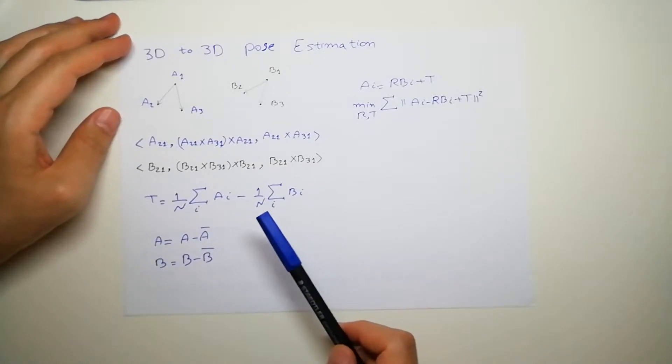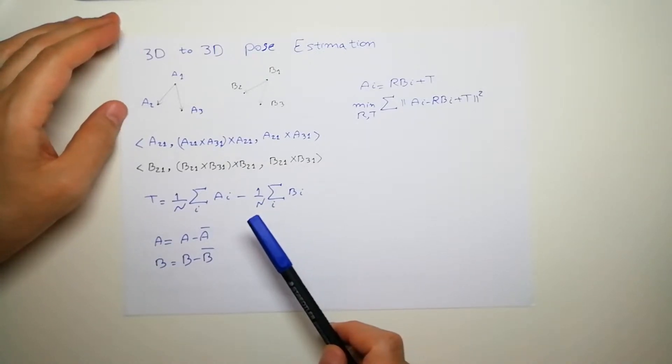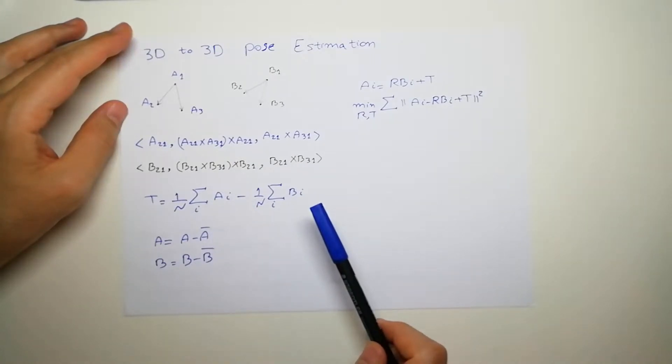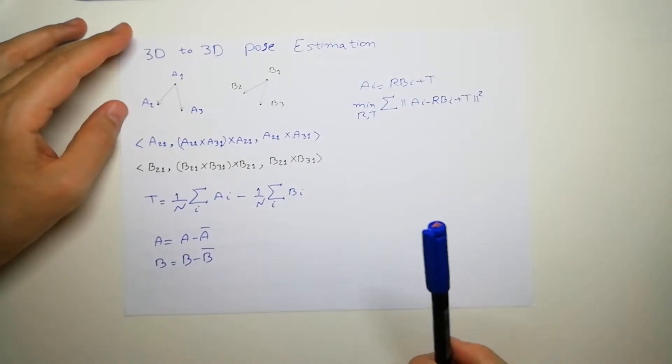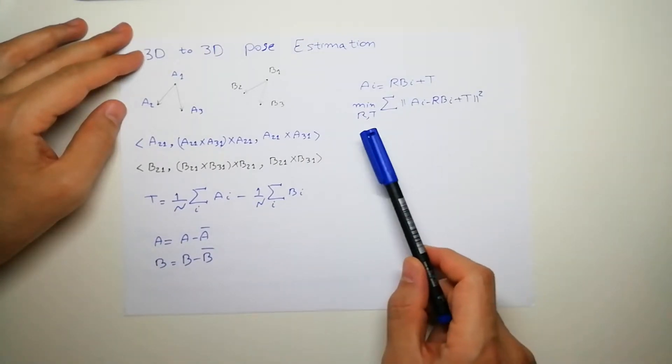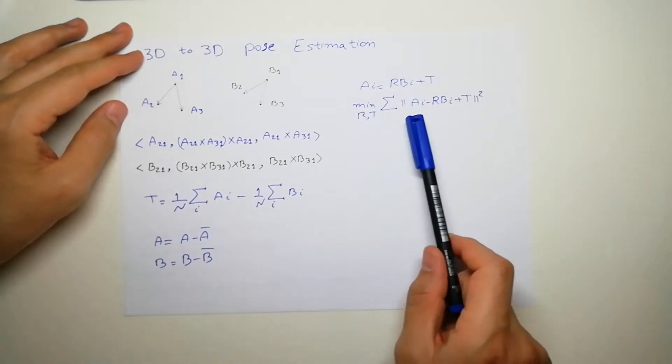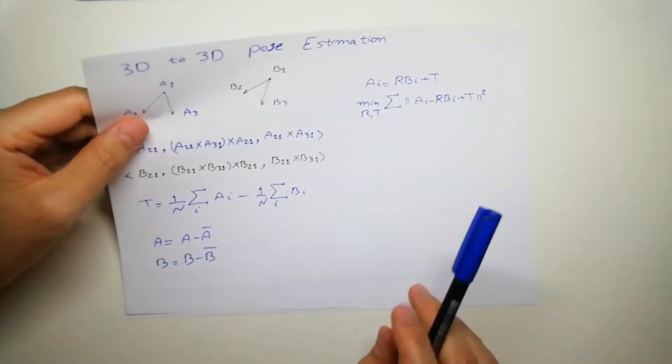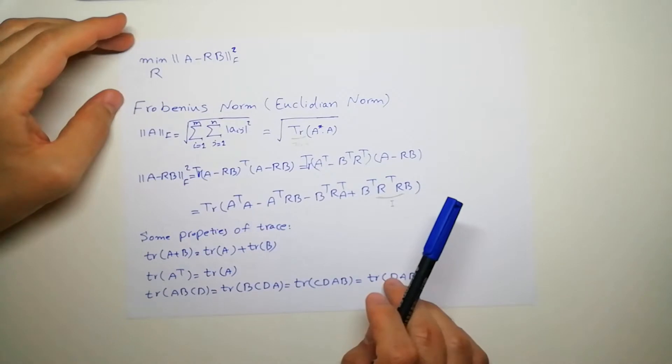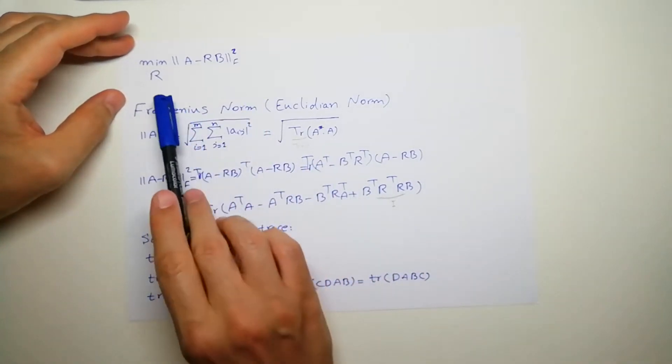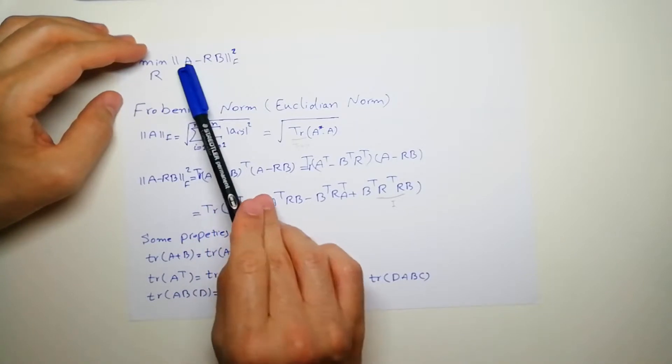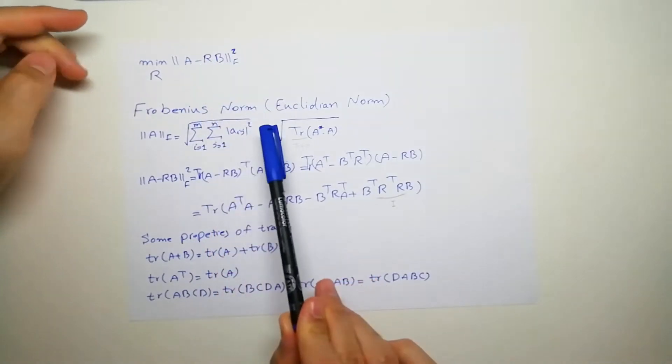And after finding translation, we shift all the points to the center so we only have a rotation problem. So now instead of R and T, we are only looking for R that minimize this term for us. So you're looking for R that minimize this term for us and remember this is a new A and this is a new B, both of them are being shifted to the new center.